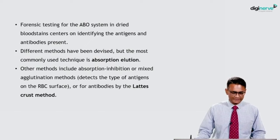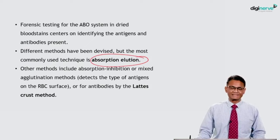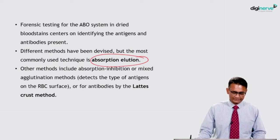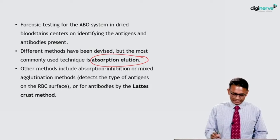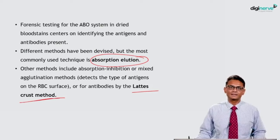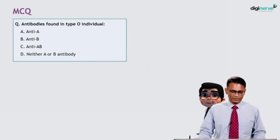Forensic testing for the ABO system in dried blood stains centers on identifying the antigens and antibodies present. Different methods have been devised, but the most commonly used technique is absorption elution. Other methods include absorption inhibition or mixed agglutination, which detect the type of antigens on RBC surfaces or antibodies by the lattice crust test.